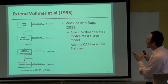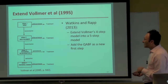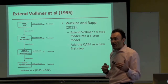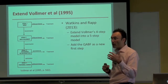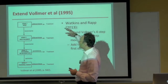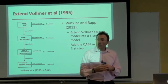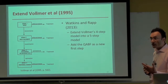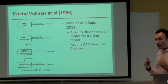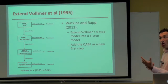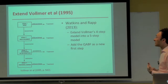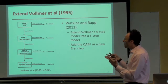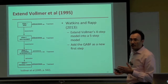What we're recommending in our paper is extending this to a five-phase rubric, with a new first phase in which we first administer the QABF. If results are differentiated — as they are in 84% of cases — we can move straight into treatment. If not, we begin these other steps.